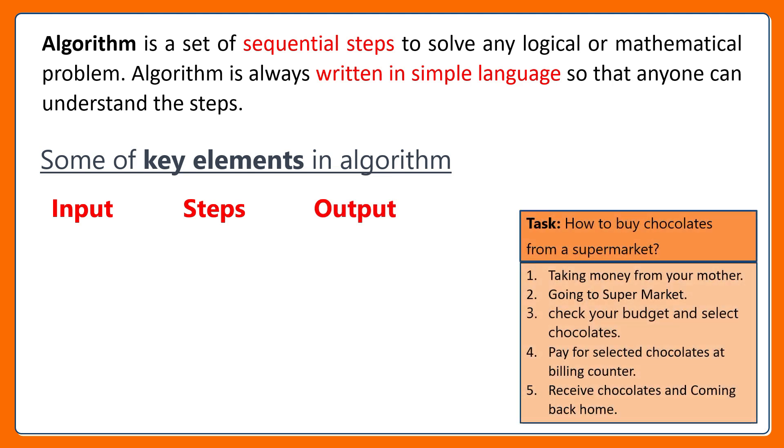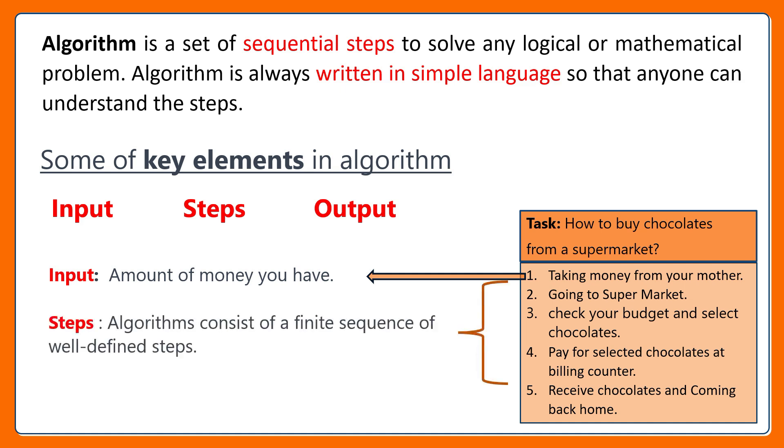Let us see the key elements from the previous example that we learnt. The amount of money you have is the input, the sequence of steps and the output is the chocolates you want to buy.